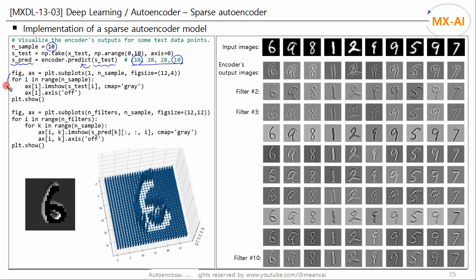Visualize 10 test data points. The results are as follows. And we visualize the encoder outputs for the 10 test data points. The results are as follows. These are the images generated by each filter for digit 6. And these are the images generated by each filter for digit 9.